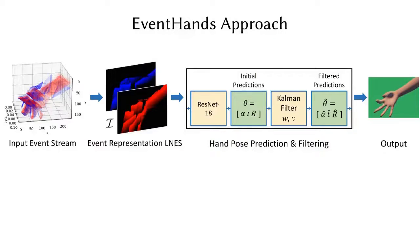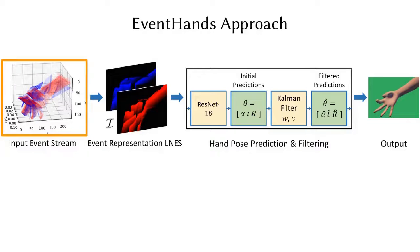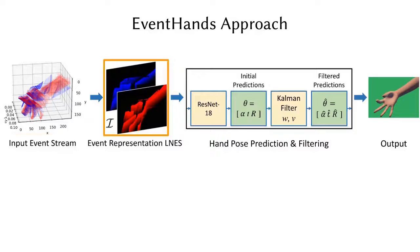Event Hands is a learning-based technique that tracks hands using an event camera. To efficiently learn from asynchronous 1D event streams, we convert them to a new accumulated representation, which we call Locally Normalized Event Surfaces, or LNES, which is more suitable for visual machine learning tasks.